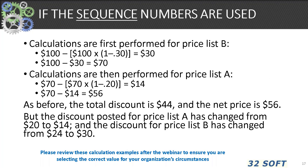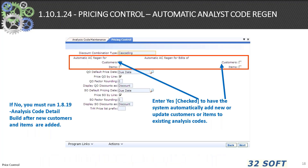After coming to grips with the discount combination option, let's look at the automatic analyst code options. If no, you must run 1.8.19 analyst code detail build after new customers and items are added. If you opt for yes, when customers or items are added, the system automatically adds them to existing analyst codes.